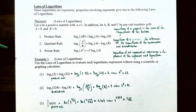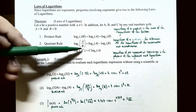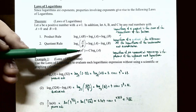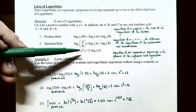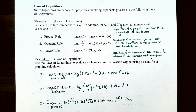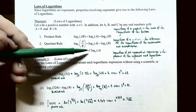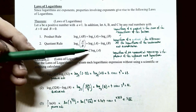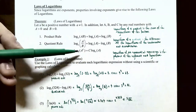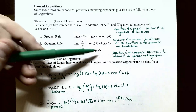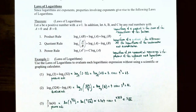Number three, the power rule says log base a of an exponential expression — where you have base A raised to the exponent C — then you can rewrite the exponent out in front as a coefficient of your logarithm. So it's C times log base a of A, where A makes up the argument. A logarithm of an exponential expression is the product of the exponent and the logarithm.